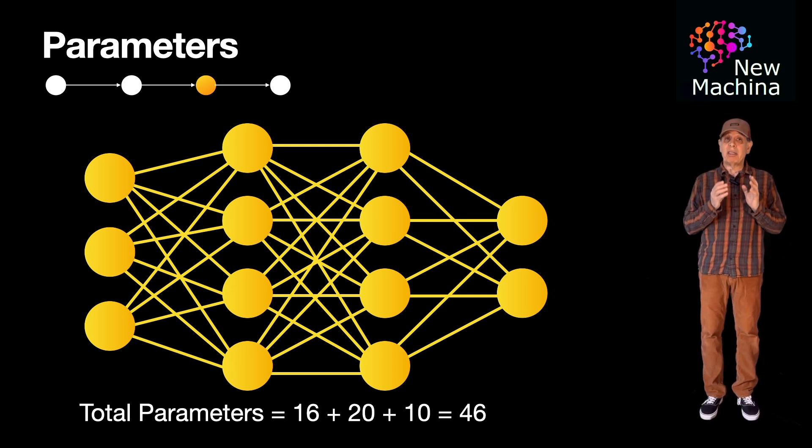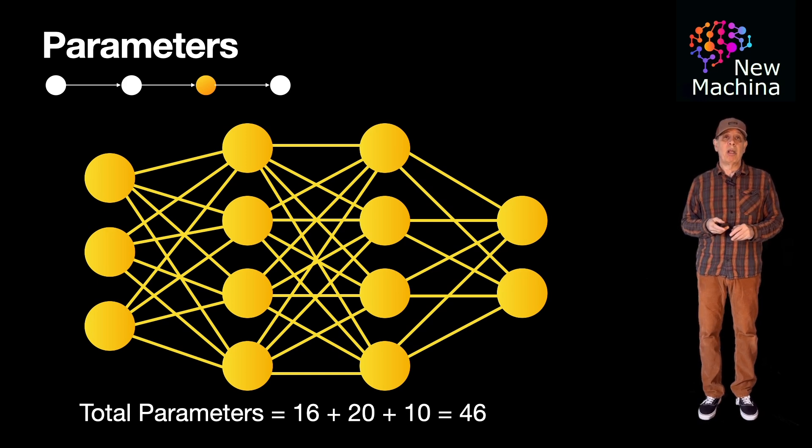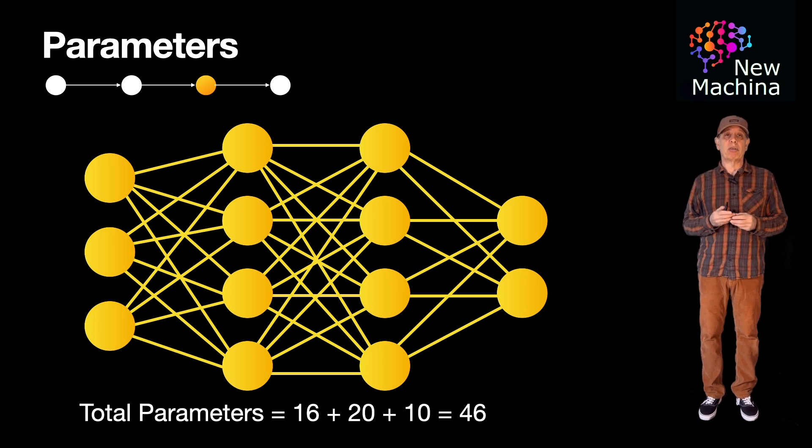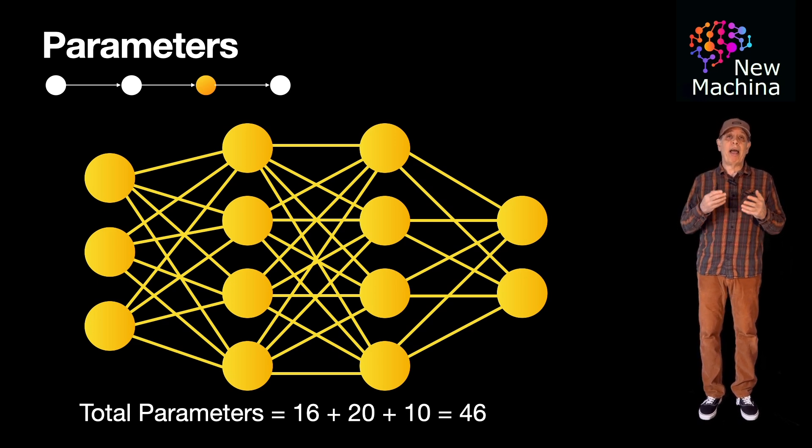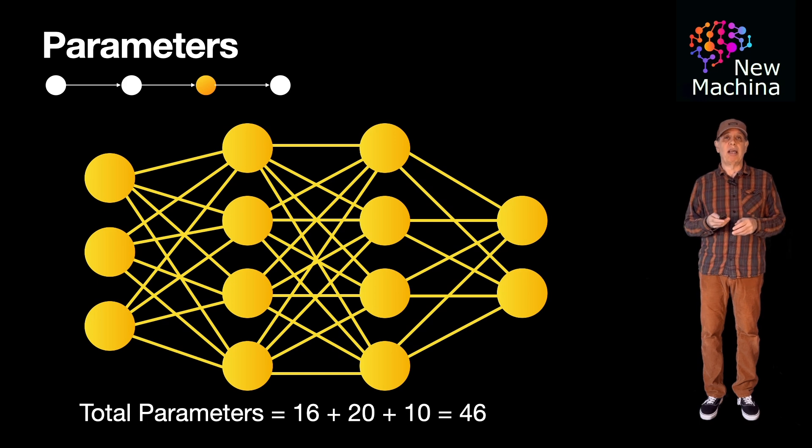So in summary, this simple artificial neural network has 46 parameters. So wrapping this up, the weights and biases are known as parameters. Parameters are trainable elements in the model. The number of parameters in a neural network influences its capacity to learn complex patterns. More parameters can enable a network to capture more intricate relationships in the data.